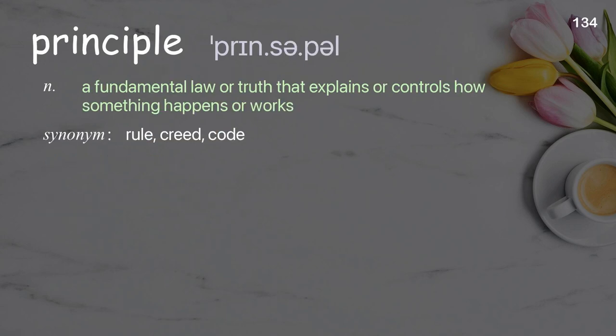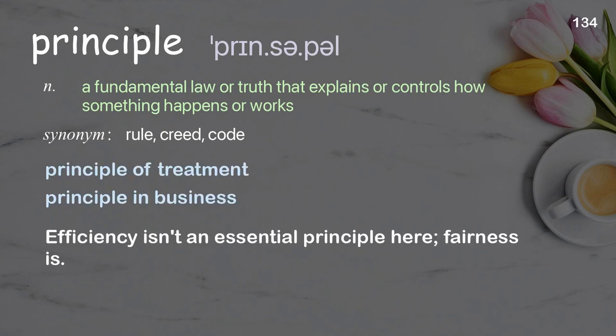Principle: a fundamental law or truth that explains or controls how something happens or works. Examples: principle of treatment, principle in business. Efficiency isn't an essential principle here — fairness is.